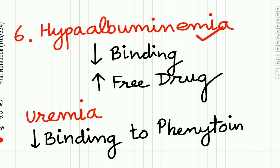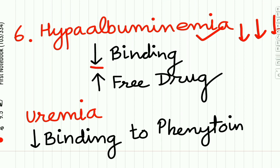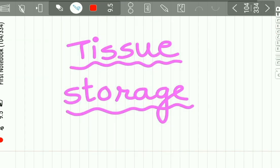The sixth important factor influencing drug distribution is hypoalbuminemia. If the patient has decreased levels of albumin in the blood, there is decreased binding of the drug to the plasma protein albumin, so more free drug is available in these patients. Diseases such as uremia also decrease the binding of phenytoin to plasma proteins.